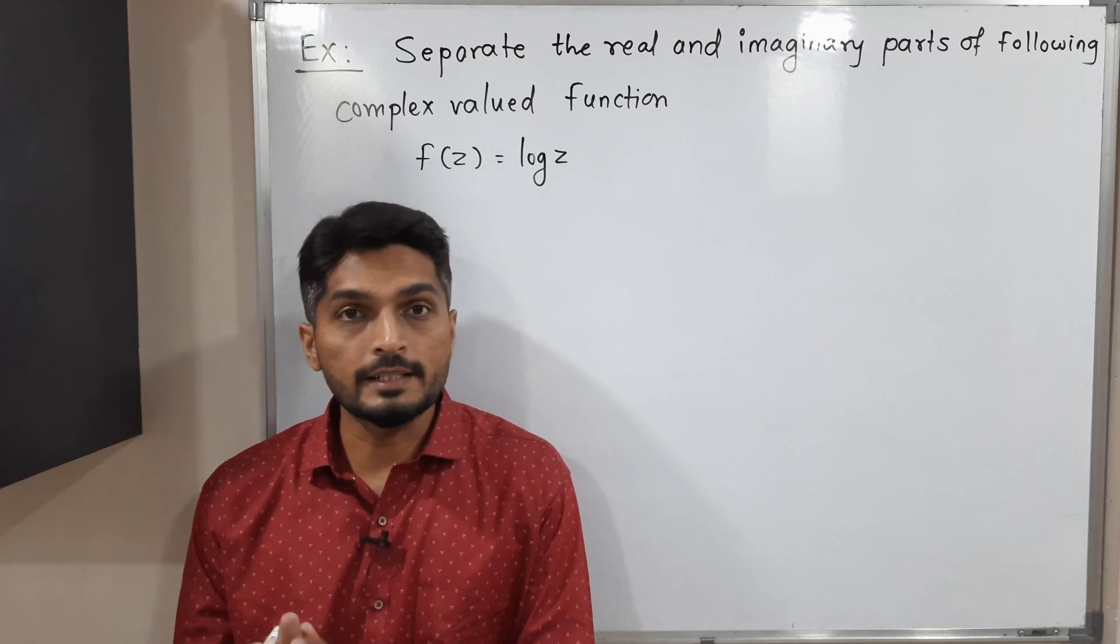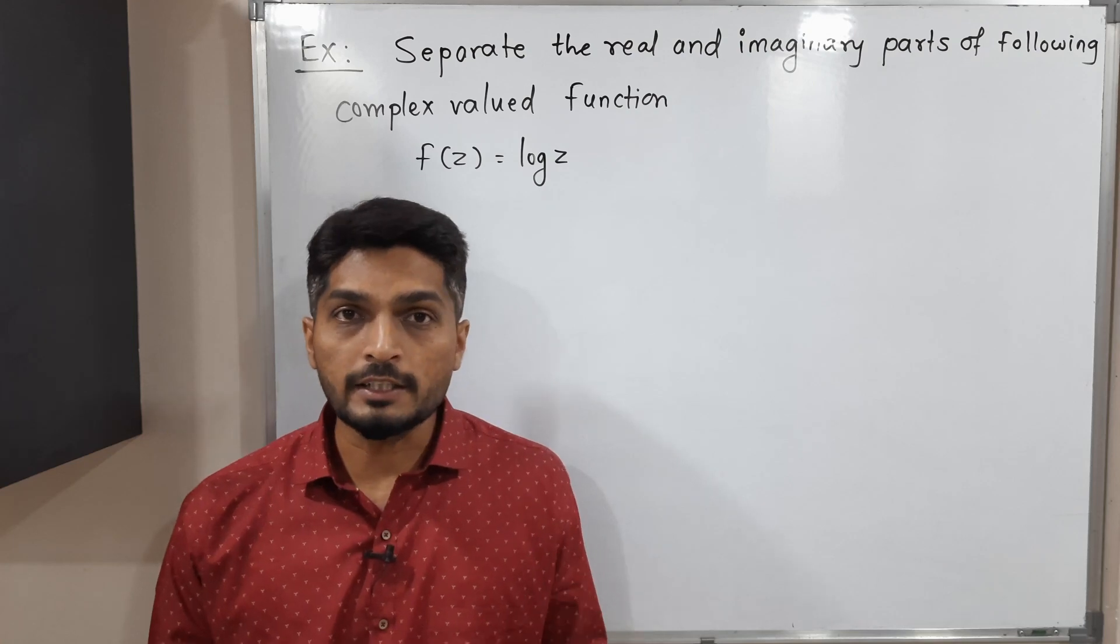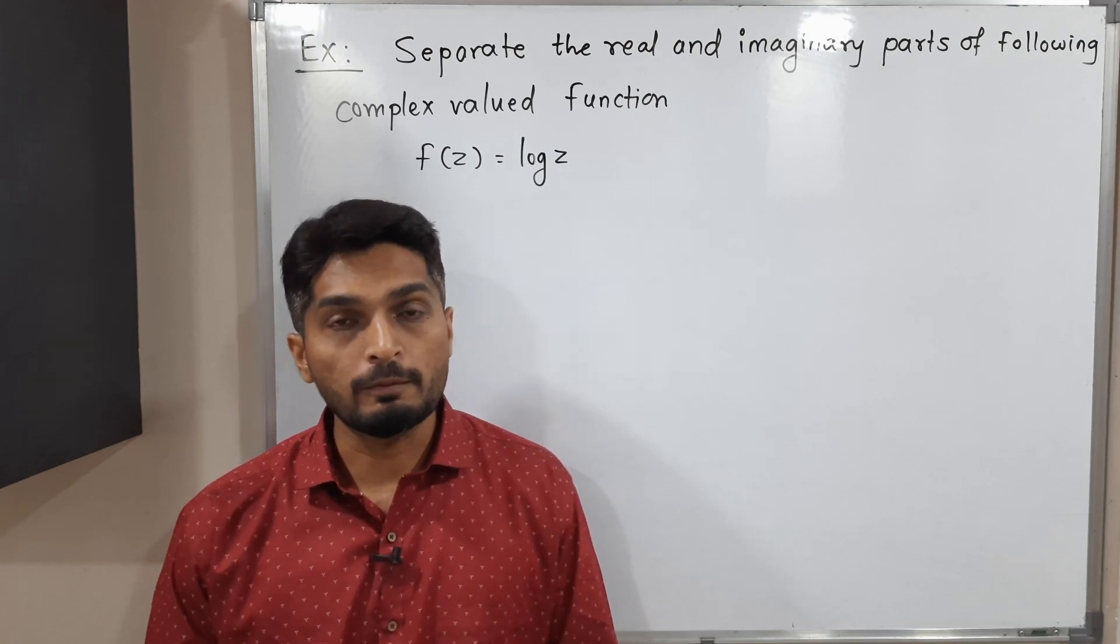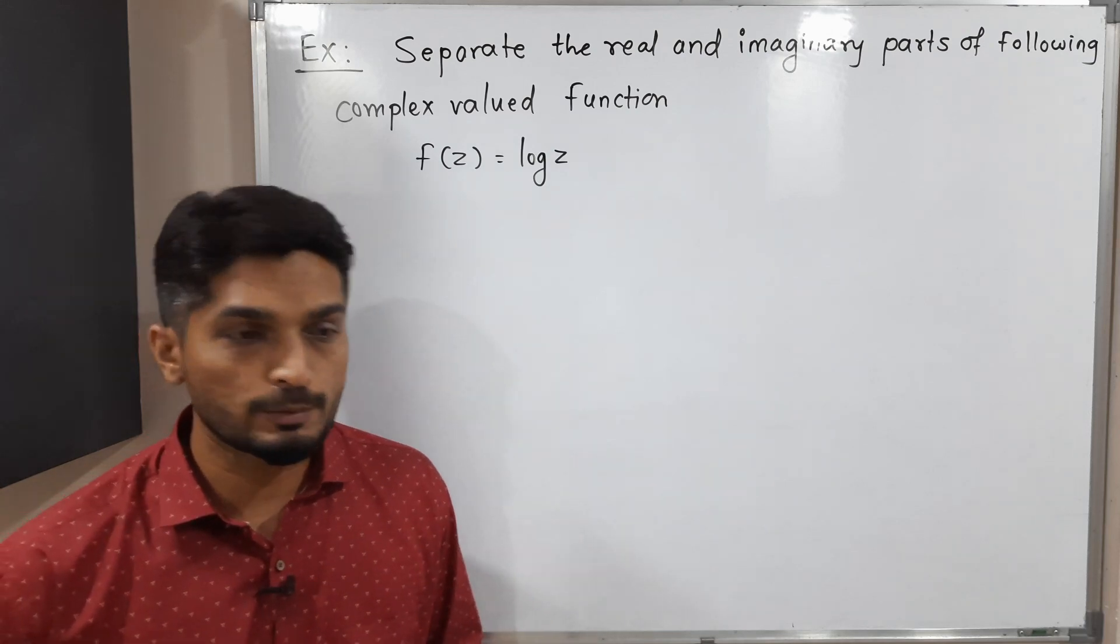We have this function f(z) = log z and we have to separate it into real and imaginary parts. That means we have to find its real part u(x,y) and imaginary part v(x,y). Before starting the actual solution of this problem, we should recall something.